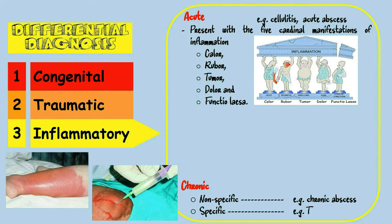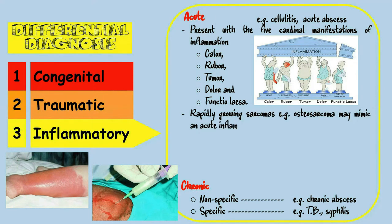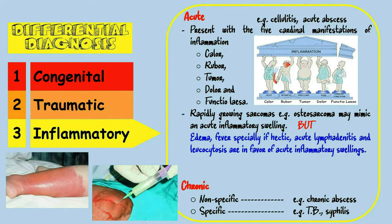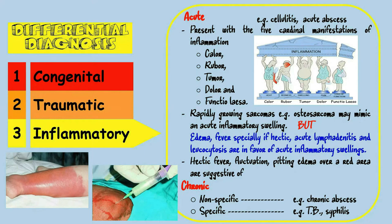A rapidly growing sarcoma — for example, osteosarcoma — may mimic an acute inflammatory swelling, but edema, hectic fever, acute lymphadenitis, and leukocytosis with shift to the left are in favor of an acute inflammatory process. Hectic fever, fluctuation, or pitting edema over a red area are suggestive of abscess formation.